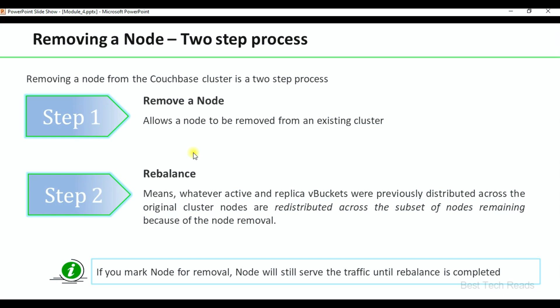Removing a node, like adding nodes, is also a two-step process. In the first step we mark the node as removed in the UI; in the second step we do a rebalance. During rebalance, whatever active and replica vbuckets were previously distributed across the original cluster nodes are redistributed across the subset of nodes remaining after the removal. Whatever data existed on the cluster will be redistributed on the remaining nodes.